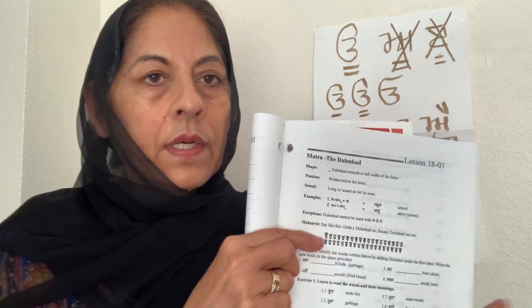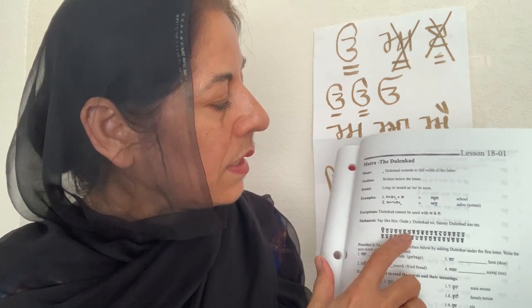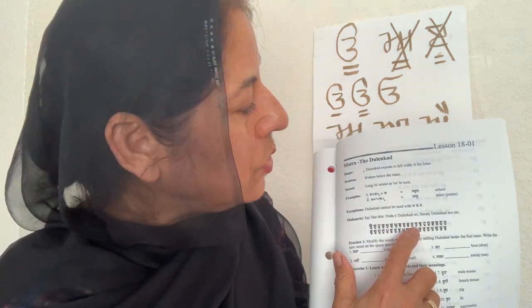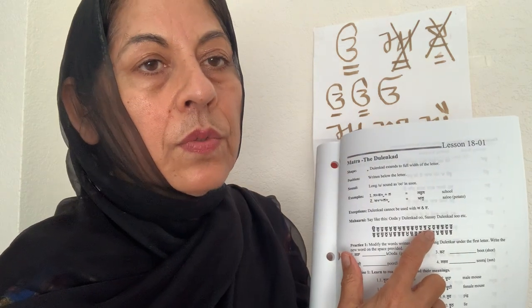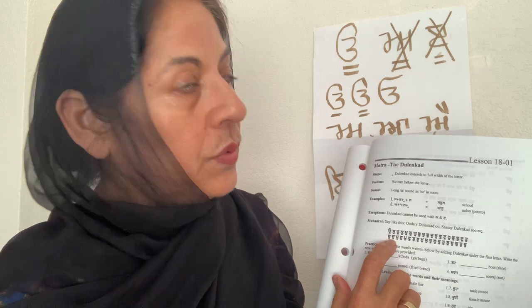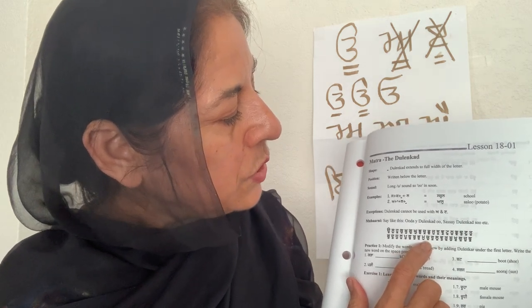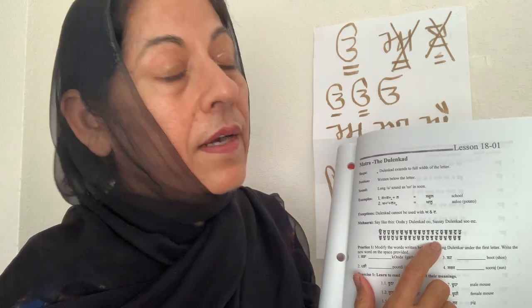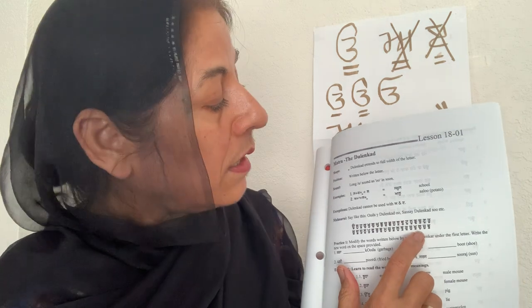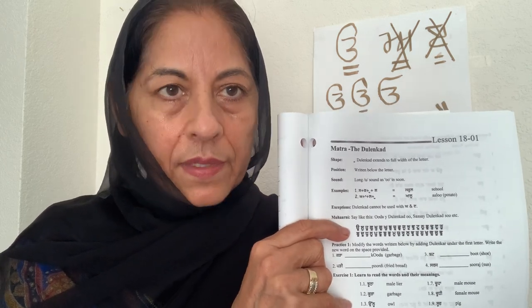Now let's do the Moharni. This is the drill going through each letter with the Lankar 'u' sound: ha-ha-hu, ka-ka-ku, ka-ka-ku, ga-ga-gu, nga-nga-ngu, cha-cha-chu, ja-ja-ju, nya-nya-nyu, ta-ta-tu, da-da-du, ta-ta-tu, na-na-nu, ta-ta-tu, da-da-du, na-na-nu, pa-pa-pu, ba-ba-bu, ma-ma-mu, ya-ya-yu, ra-ra-ru, la-la-lu, va-va-vu, ra-ra-ru. This is called Moharni. Make sure you say Moharni for every Matra every day for the next 10 days and I promise you will memorize each one of those matras.